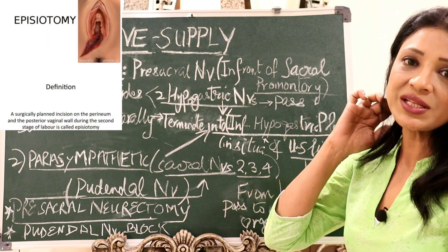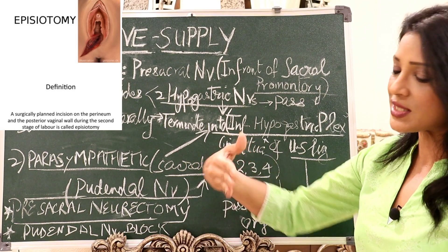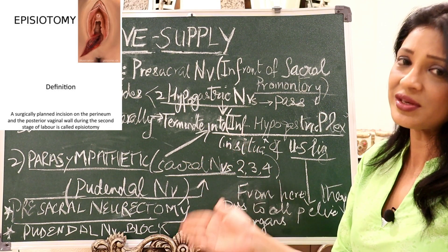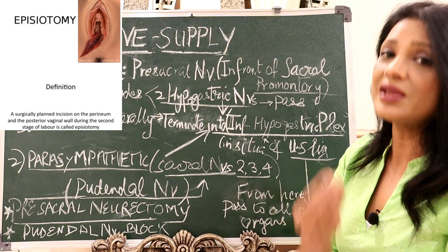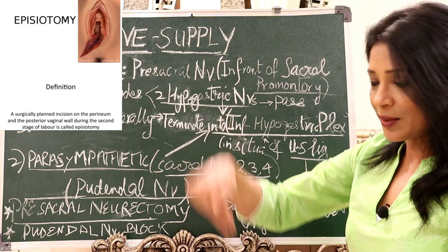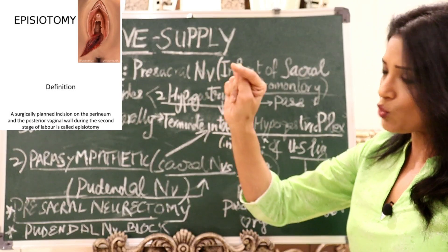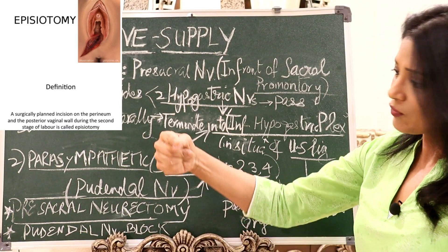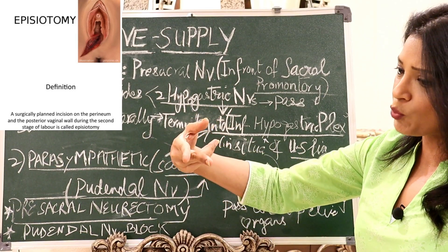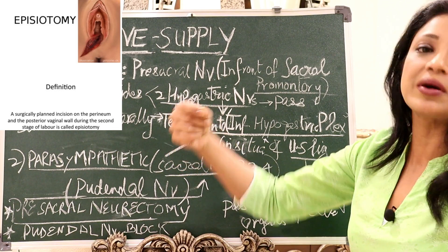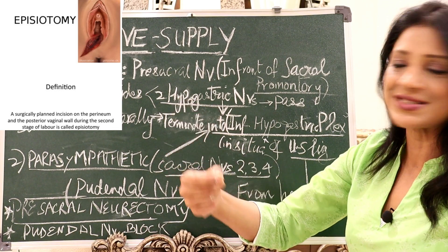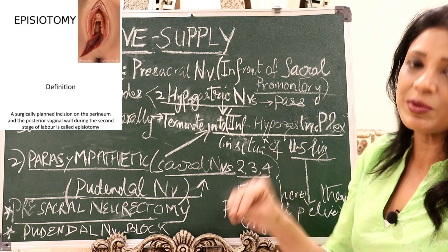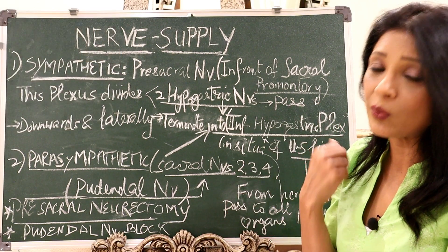For episiotomy, we apply local anesthesia along the posterior fourchette going mediolaterally — left or right depending on the surgeon's dominant hand — away from the rectum, so that stitching is easier, rectal injury is avoided, and patient pain is minimized.